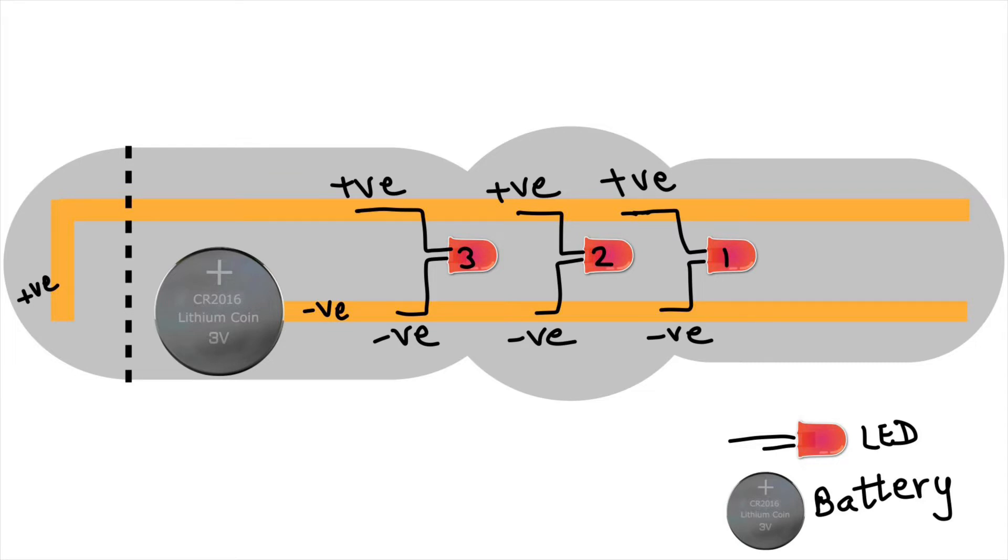Now we will attach the coin battery and the negative side of the battery will be touching the copper tape which is pasted at the bottom of the bracelet.